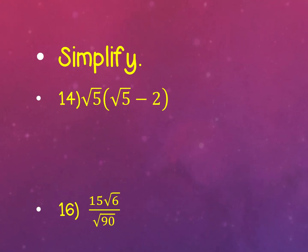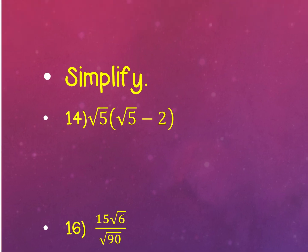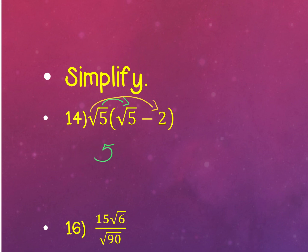Here we're multiplying a square root into a binomial using the distributive property. Distribute the square root of 5 to the square root of 5: that's a pair of square root of 5s, so pull it out — it equals 5. Also distribute the square root of 5 to the negative 2: the 2 is outside the radical and the 5 is under it, so write them side by side as negative 2 square root 5. You cannot combine the 5 and the 2 square root 5 because the outside 5 has no radical, so that's your final answer.